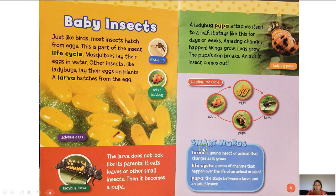We have more smart words. Larva: a young insect or animal that changes as it grows — it's what it looks like after it hatches from an egg, and after the larva it turns into a pupa, then an adult. Life cycle: a series of changes that happen over the life of an insect or plant — this is the life cycle of a ladybug. Pupa: the stage between a larva and an adult insect.